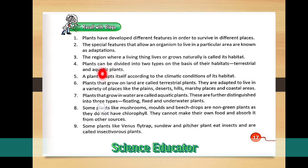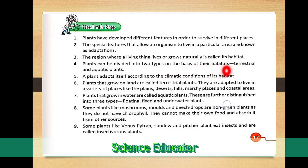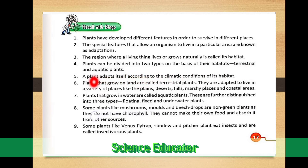Fourth point: plants can be divided into two types on the basis of their habitats — one is terrestrial and the second is aquatic.